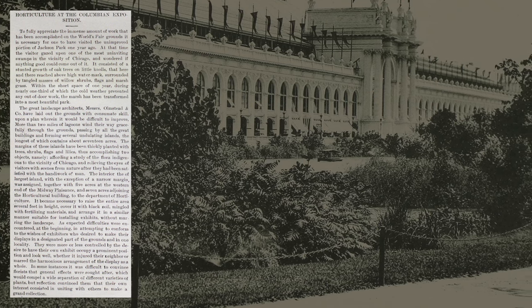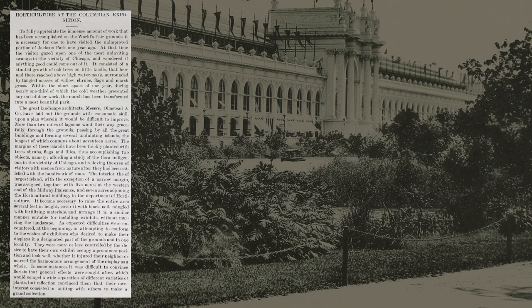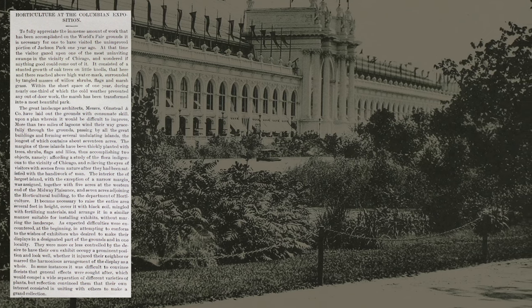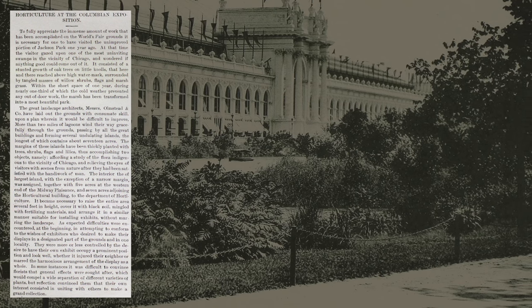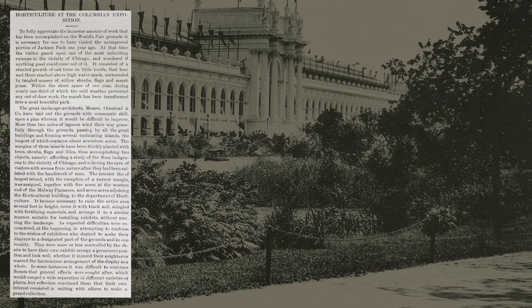The great landscape architects Olmsted and Co. have laid out the grounds with consummate skill upon a plan wherein it would be difficult to improve. More than two miles of lagoons wind their way gracefully through the grounds, passing by all the great buildings and forming several undulating islands, the longest containing about seventeen acres. The margins of these islands have been thickly planted with trees, shrubs, flags, and lilies, accomplishing two objects: affording a study of flora indigenous to the vicinity of Chicago, and relieving the eyes of visitors with scenes from nature.